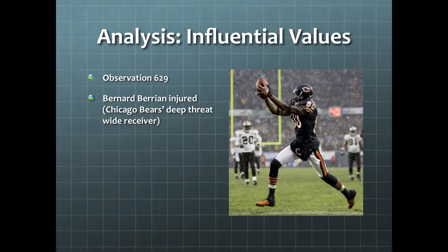For example, in the game corresponding to number 629, Bernard Berrien, Chicago's deep threat wide receiver, suffered an injury at the beginning of the game. The Bears went on to lose 13-31.